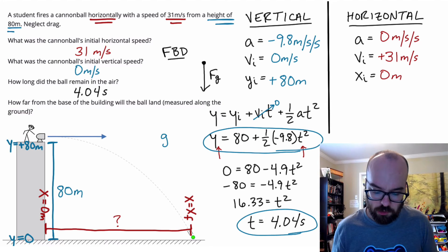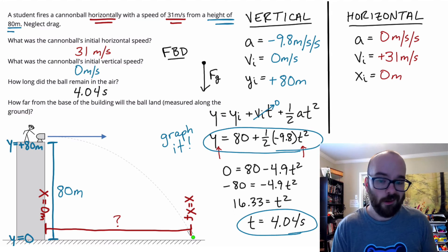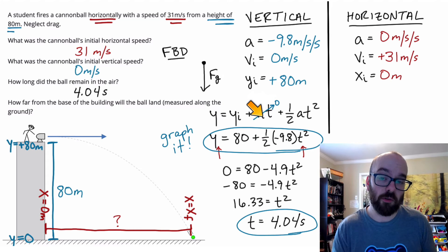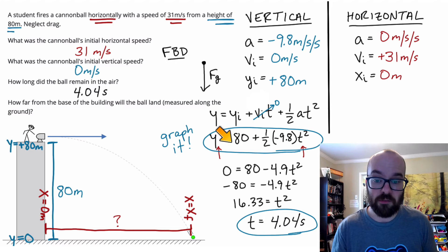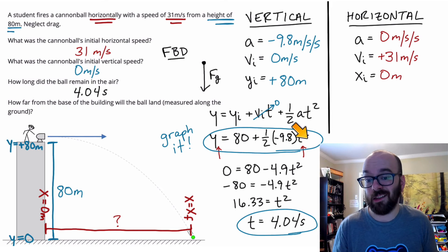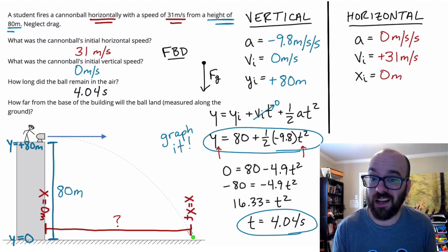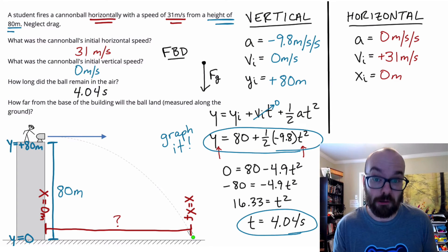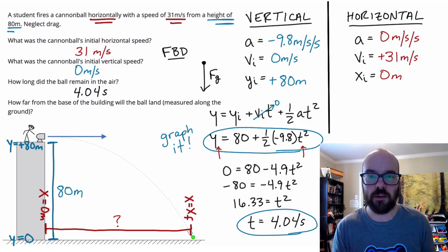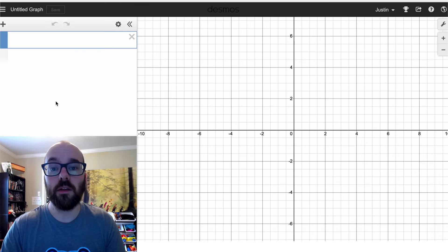Now I want to show you a graphical method as well. If the cannonball weren't launched horizontally — say it was launched at an angle — we'd get a more complicated quadratic. Rather than using the quadratic formula, I prefer to do it graphically. Let's jump over to Desmos and check it out.